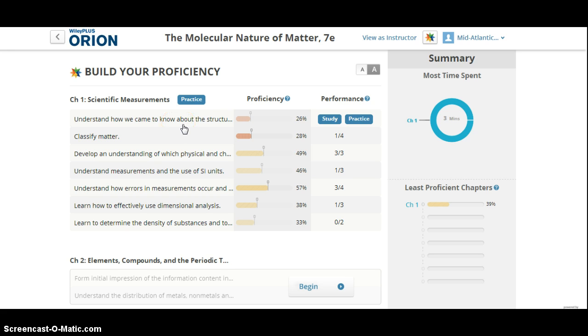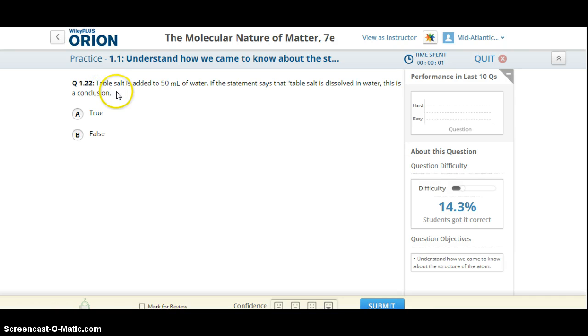So it would behoove this student to, outside of class, further study this objective by clicking the study button. This would take them back into Wiley Plus to the specific objective related resources so they can then learn more about it. Then they could come back, practice some more, and Orion would provide them additional questions that relate to that specific objective, which you can see here.